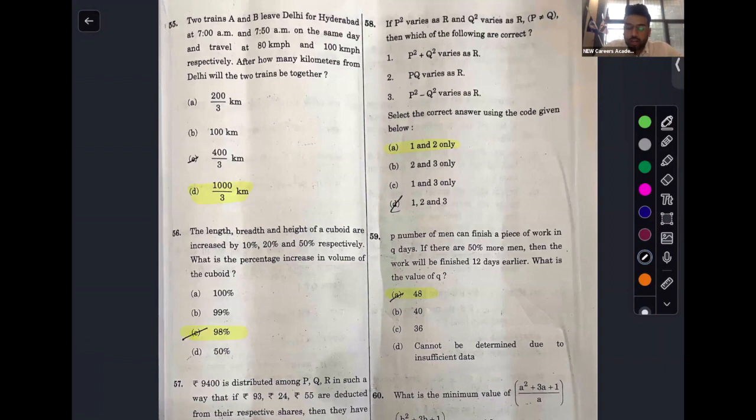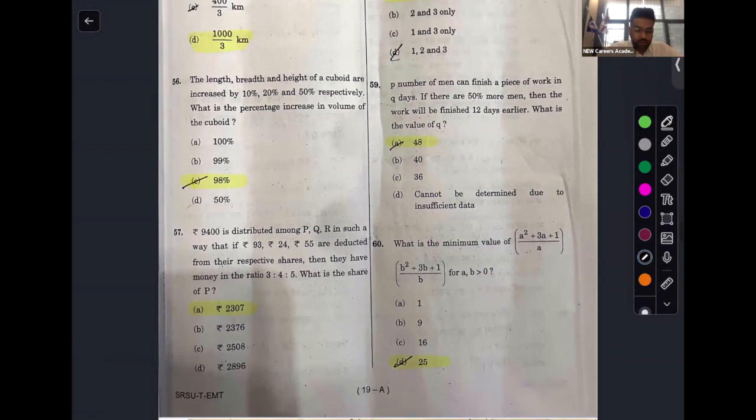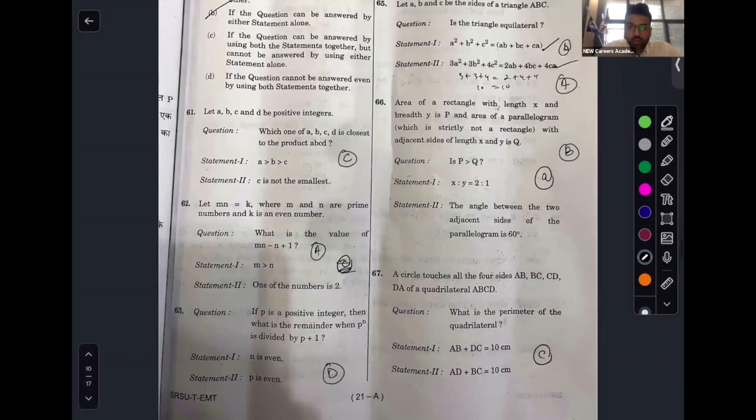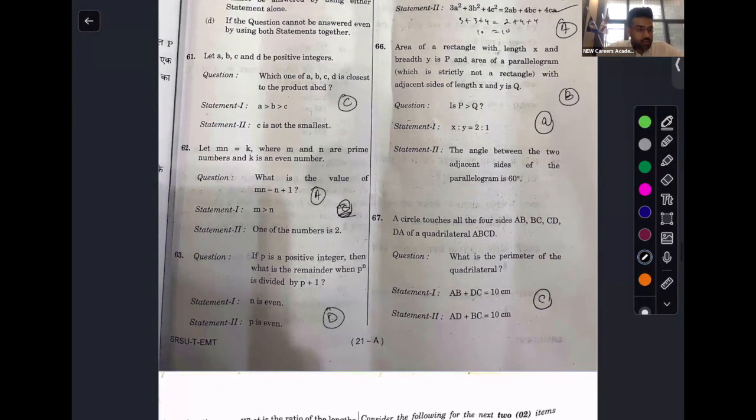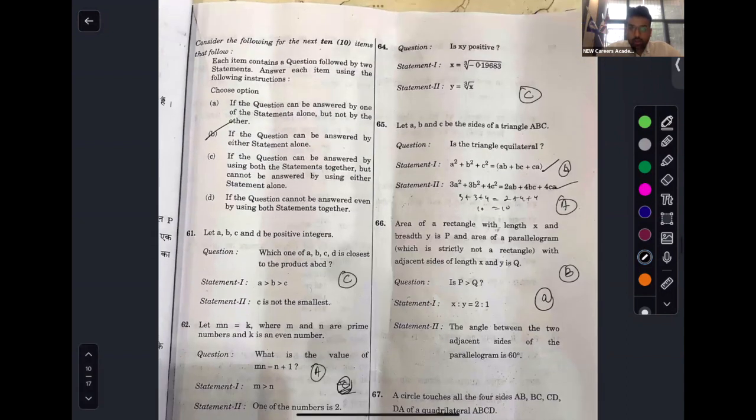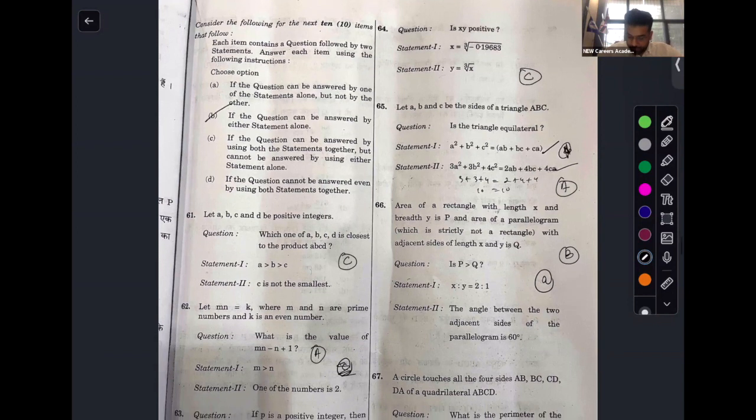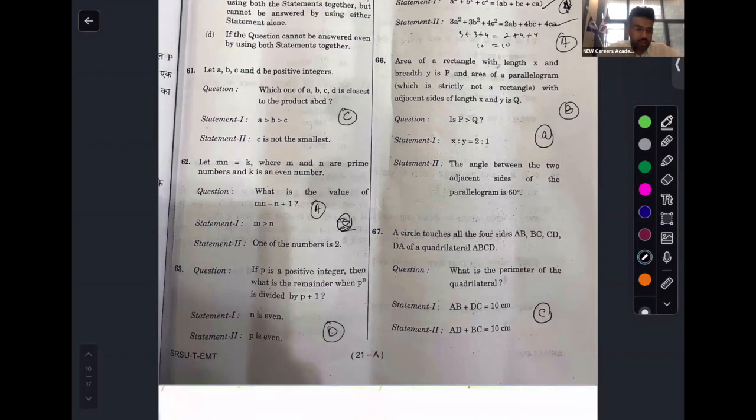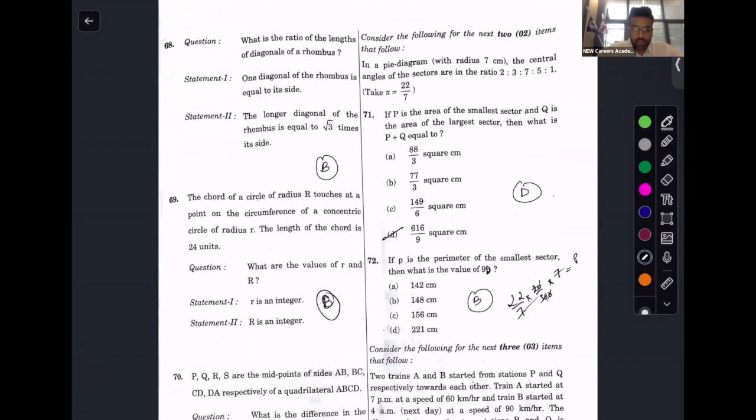P2 varies as R and Q2 varies as R. This answer is alpha. P min can finish a work, this answer is alpha. 60th answer is minimum value. This answer is 3-3. Now the statement based question, 61st to the first question, this answer is Charlie. 62nd answer is alpha. 63rd answer is delta. 64th answer is 4. 65th answer is alpha. 66th answer is bravo. 68th answer, 69th answer is bravo.